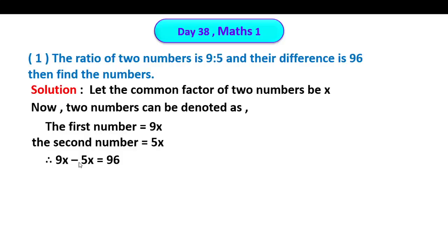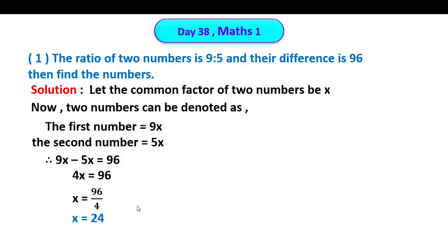Therefore 4x is equal to 96. We need to find the value of x. Dividing both sides by 4: x is equal to 96 divided by 4. x is equal to 24.